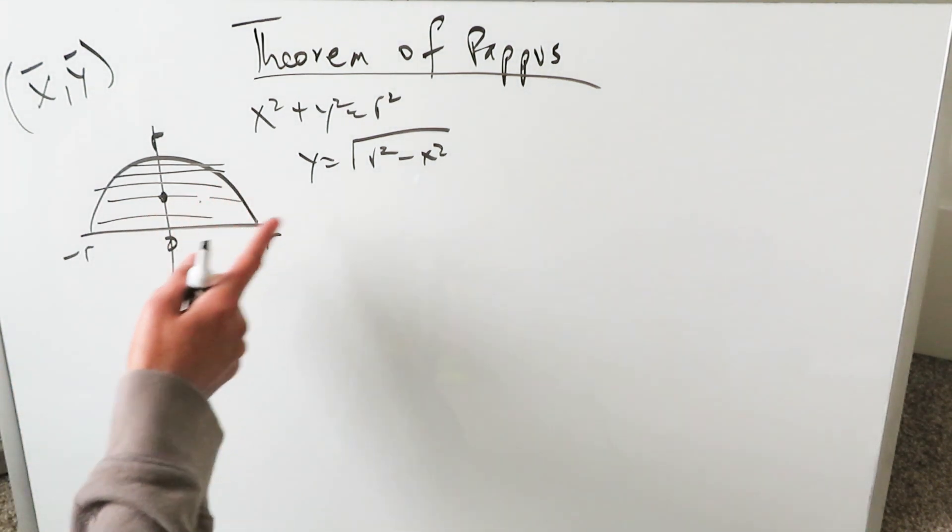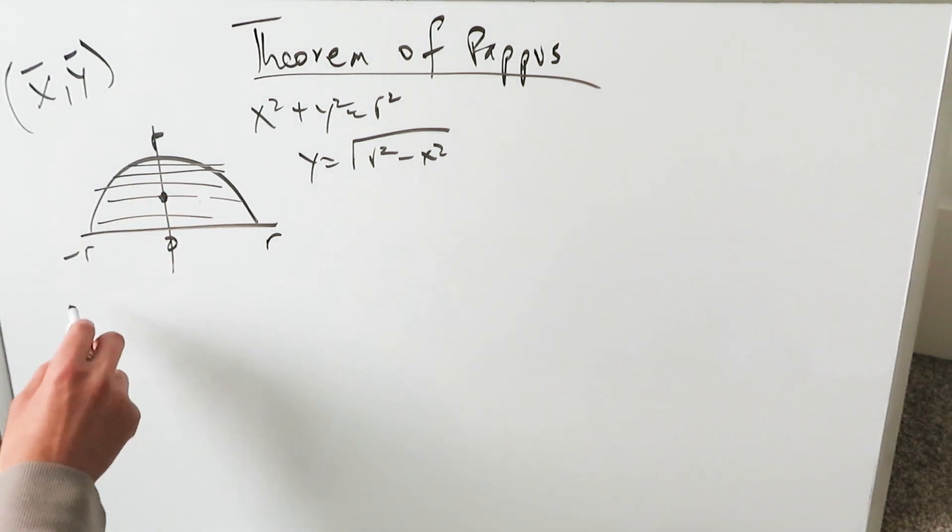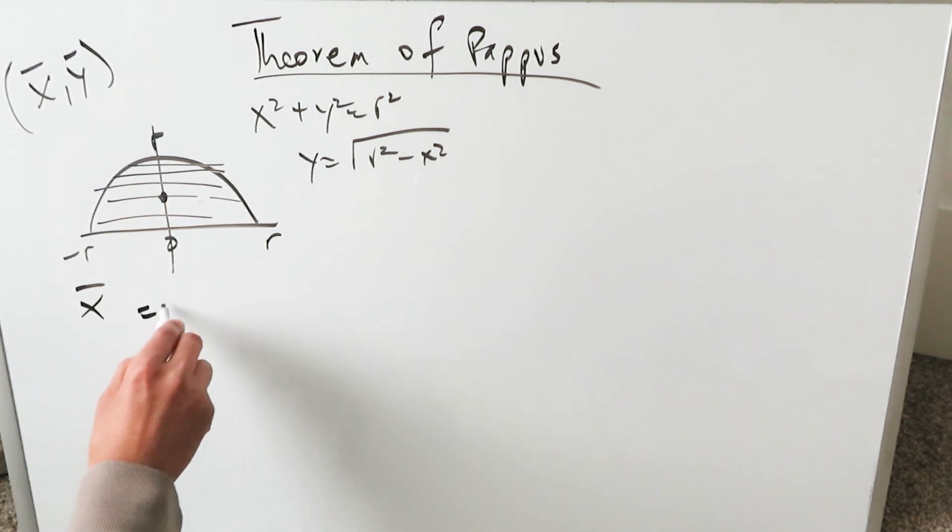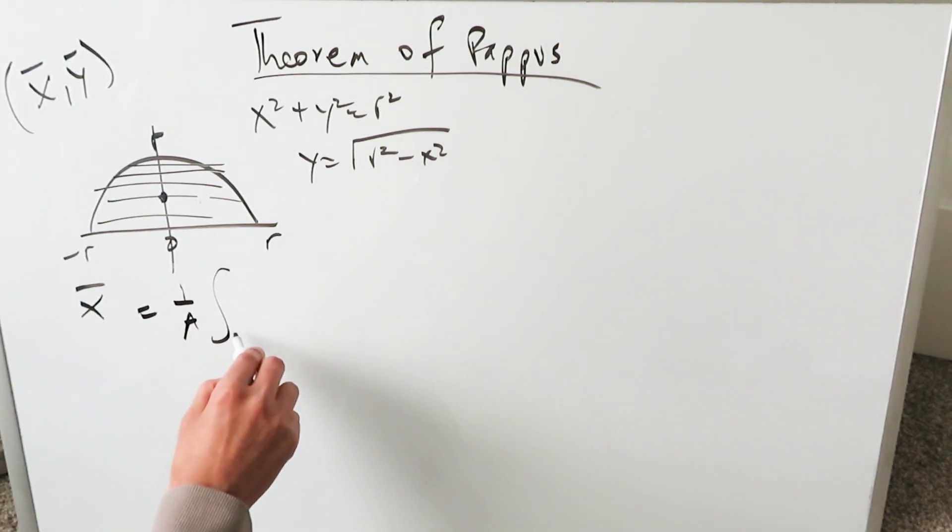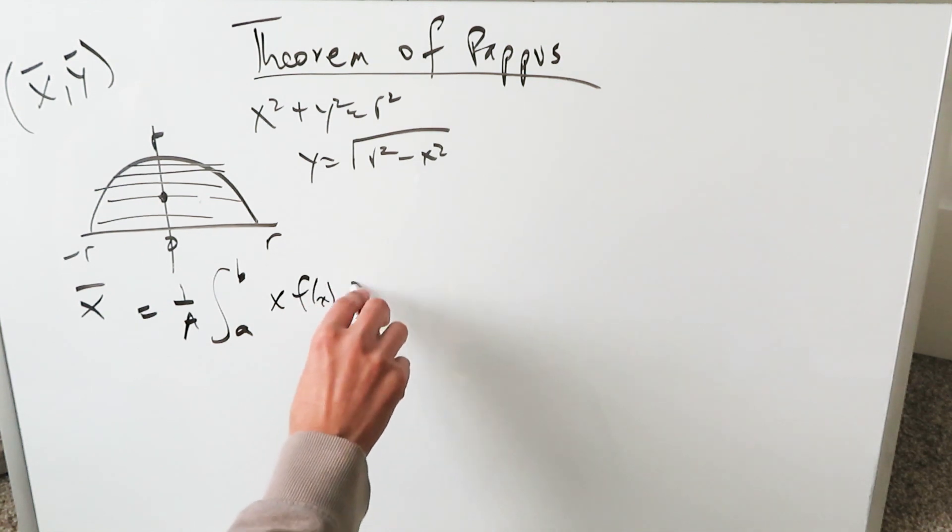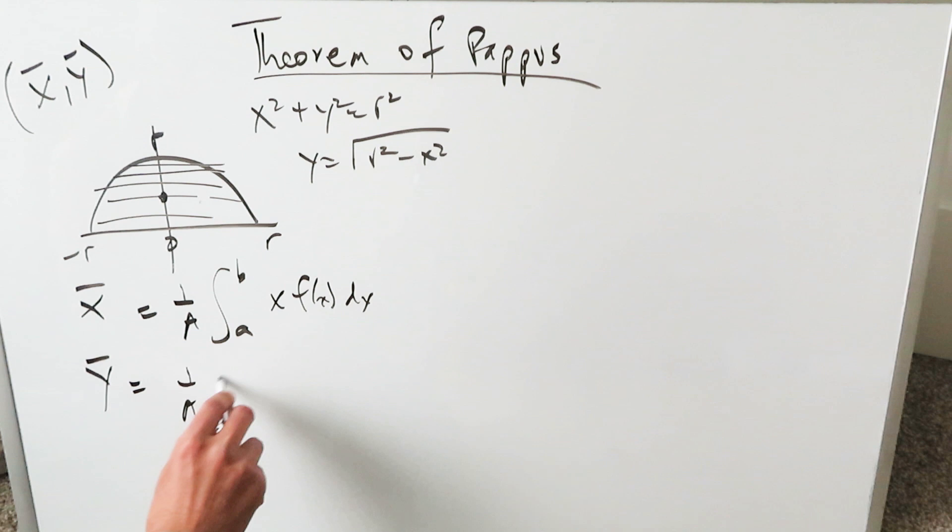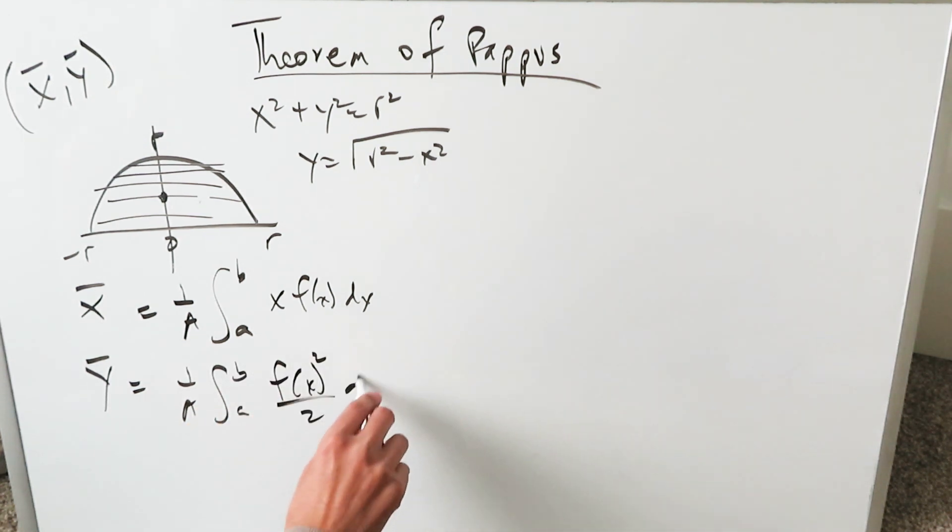We have to do the volume derivation here using the sphere. You know it's 4/3 πr³, but it will start with this. The x̄ value of your centroid is equal to 1/A, the reciprocal of the area, you have the formula ∫[a to b] x·f(x) dx. The ȳ value is always equal to the reciprocal of A, ∫[a to b] [f(x)]²/2 dx. Everything here is still dx.